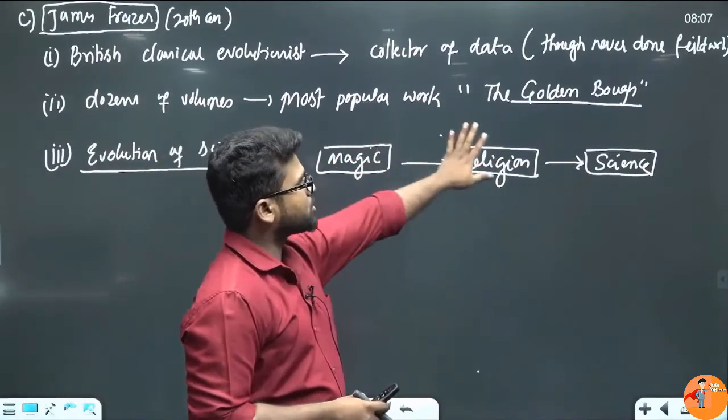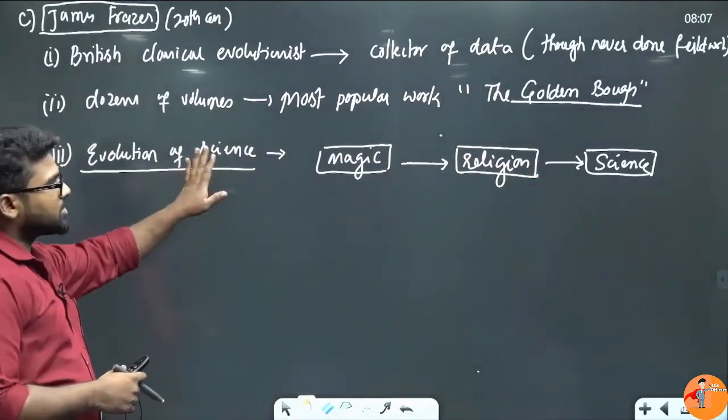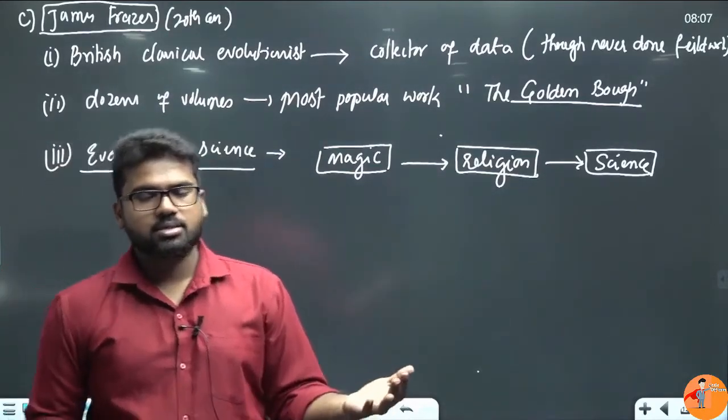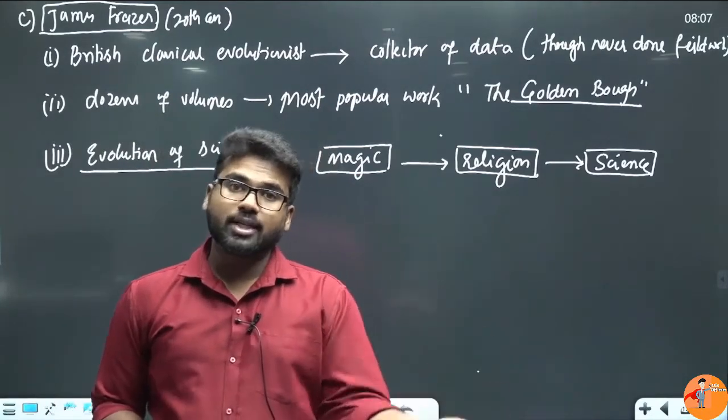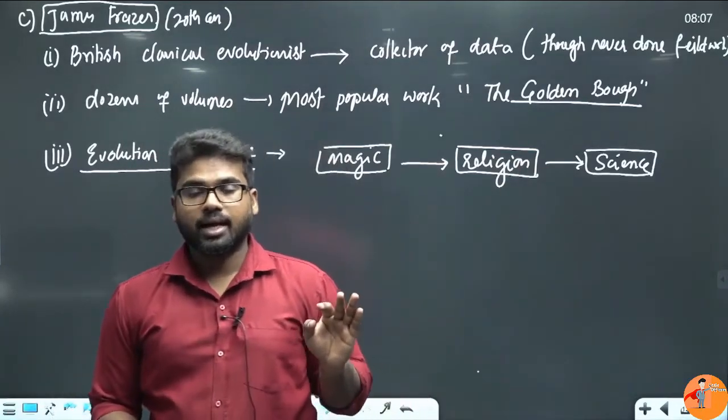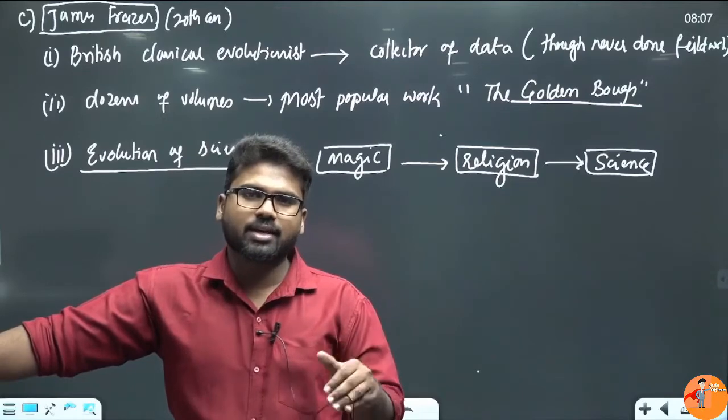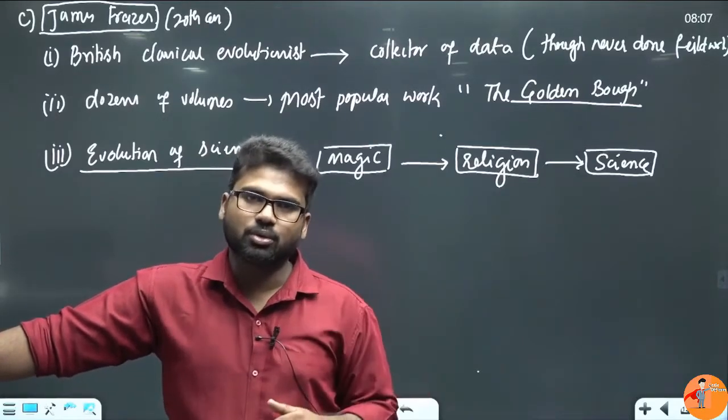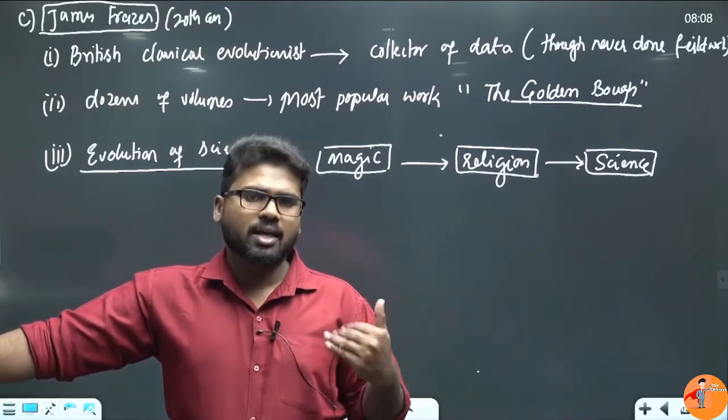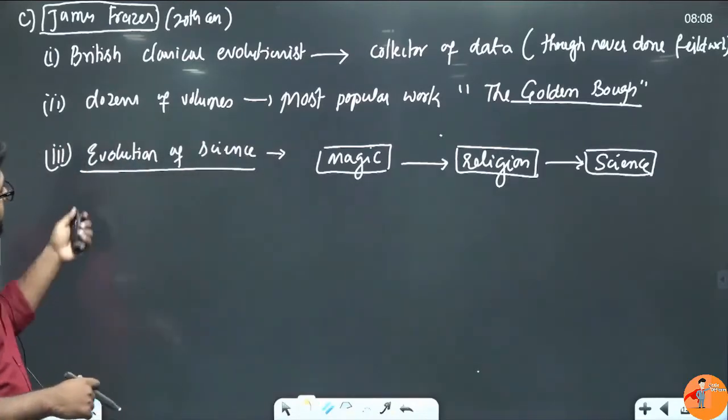We have just now done the comparative analysis of all three of them. You can see closely how closely they are linked. This is the greatest contribution. He also studied superstitions. But the thing is, he was doing it in 20th century. By 20th century, the diffusionist school was very well prominent. And evolutionism, particularly classical evolutionism, was being discarded. It has got very less importance by then. And people were not following this evolutionary school. So his contributions are very limited in this mode.